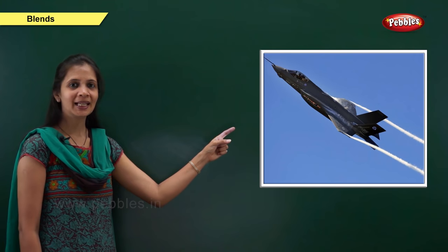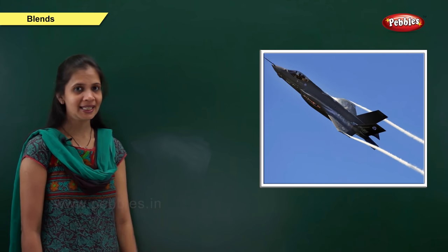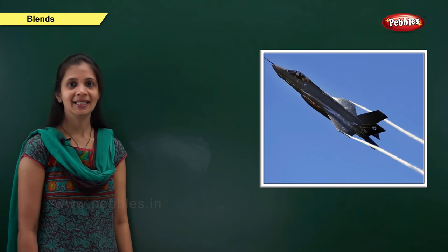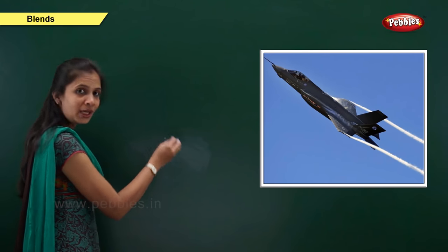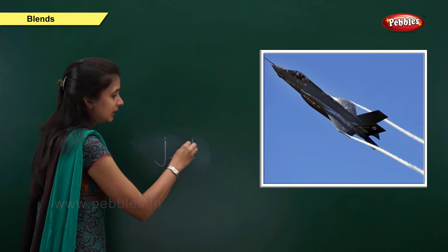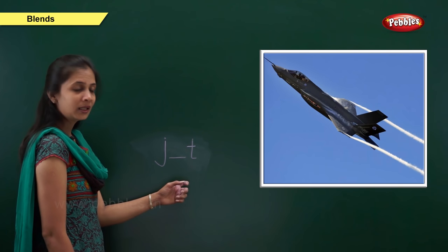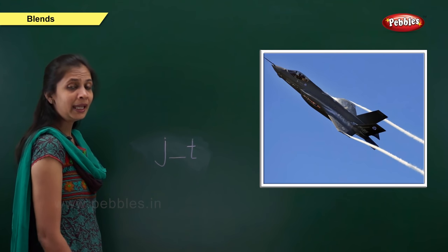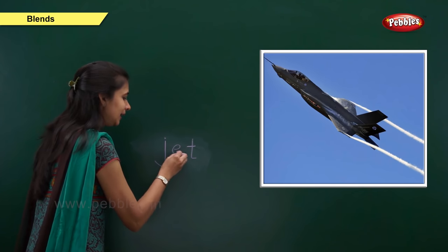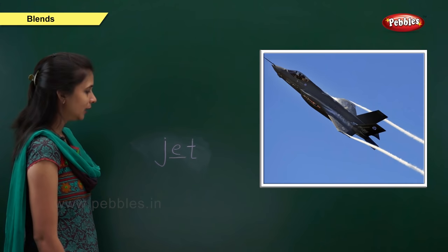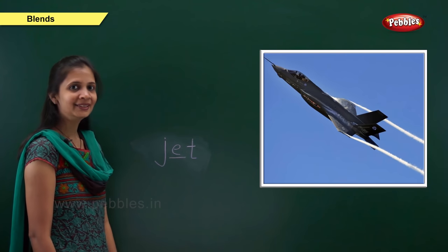Next one. Which picture is this? Yes, it is jet. What is the sound of this word? It is j, a, ta — jet. When the sound is 'j', the letter is j. When the sound is 'ta', the letter is t. What about the middle sound? The sound is 'a'. The letter is e. Vowel e. So: j, e, t — jet.